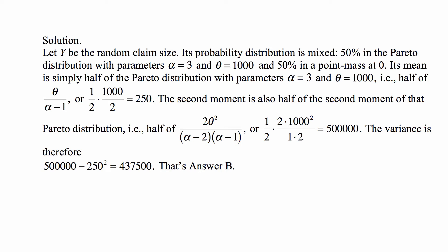The point mass at 0 has mean of 0 and variance of 0 and second moment of 0 as well. So half of θ/(α-1) with the parameters that we have, that's half of 1000/2, which is half of 500, or 250.